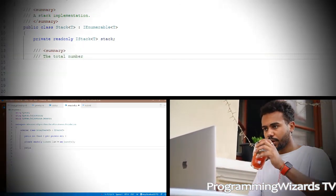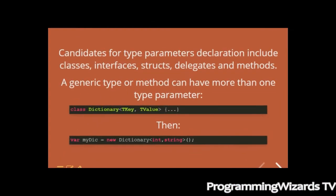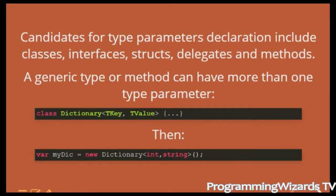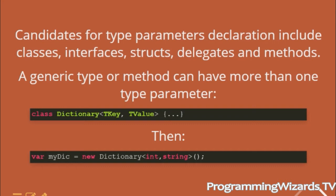Candidates for type parameters declaration include classes, interfaces, structs, delegates, and methods. The generic type or method can have more than one type parameter. If your generic types and methods have only a single parameter, then as a convention you can name the parameter T. With multi-type type parameters, you can specify a more descriptive name, but prefixed with T. For example, developers like using TKey and TValue.